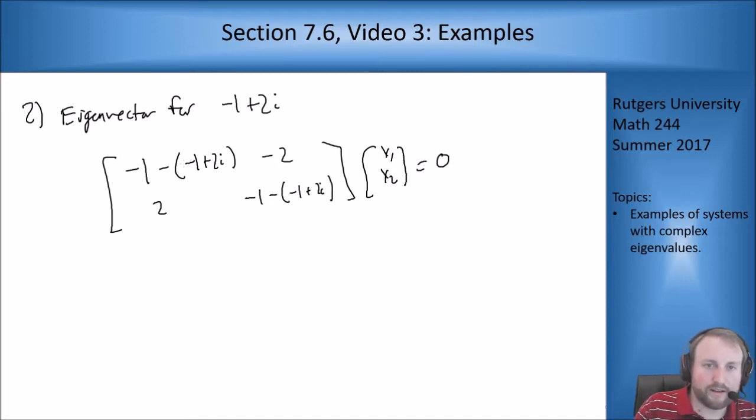So I can see right away, minus 1, minus 1 cancel. And I end up with the matrix negative 2i, negative 2, 2, negative 2i, x1, x2, equals 0.